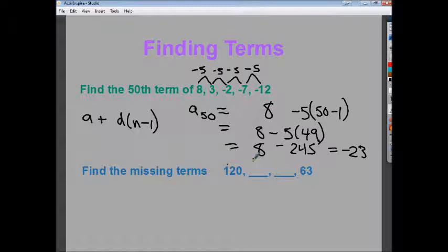What else might occur is to find missing terms. The nice thing about arithmetic sequences is it's easy to tell that they have a common difference, so it's easy to break up the difference between terms into equal parts. So the first thing I need to do is look at how many equal parts I need to break it into. It takes 1, 2, 3 to get from one to the other.